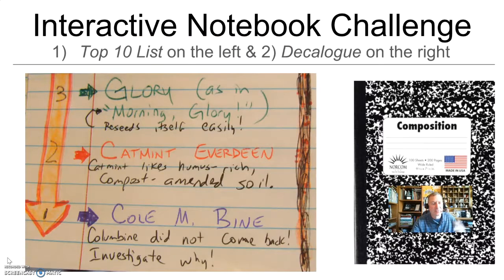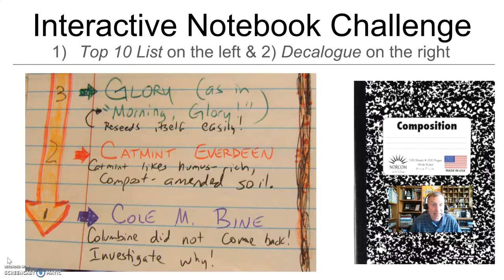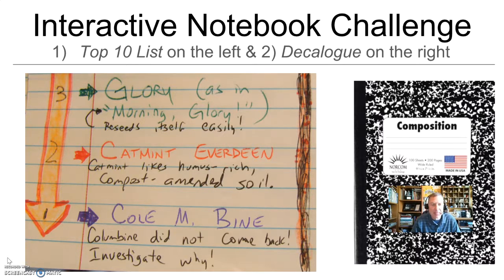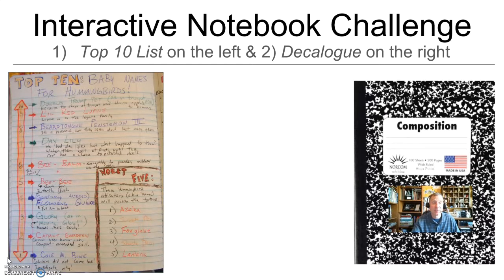Finishing my top 10 list: I liked morning glory — it's the name of a flower, so I thought naming someone 'Glory' would be funny. I went with Catmint Everdeen — catmint is a real plant I'll be planting next year, and it sounded like Katniss Everdeen. My best name, my number one, was: instead of Columbine, I came up with Coal-and-Bine — a great name for a hummingbird. So that's the top of my top 10 list, and that's how it came to be.